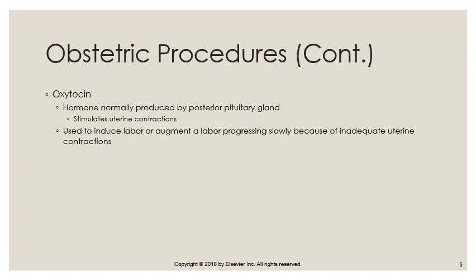Oxytocin is the hormone produced by the hypothalamus and stored in the posterior pituitary that causes uterine contractions. The synthetic form is Pitocin, which is used to stimulate uterine contractions to deliver the baby and to clamp down on uterine arteries to prevent excessive bleeding. Pitocin is used to induce labor and also to augment labor that is progressing slowly because of inadequate uterine contractions.